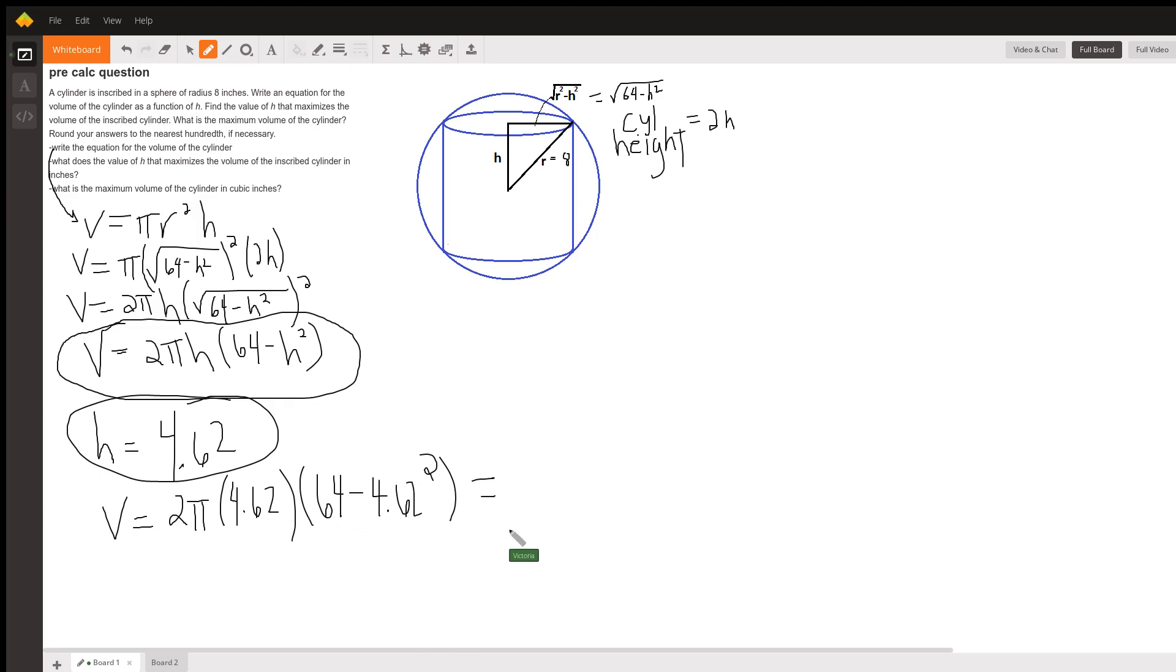And so this whole thing, if we do the parentheses first, is 64 minus 4.62 squared, and then we multiply that by 4.62 times 2 times pi. And I get that the maximum volume is 1238.22. And since we are in inches, that's going to be cubic inches. And so this would be our last answer.